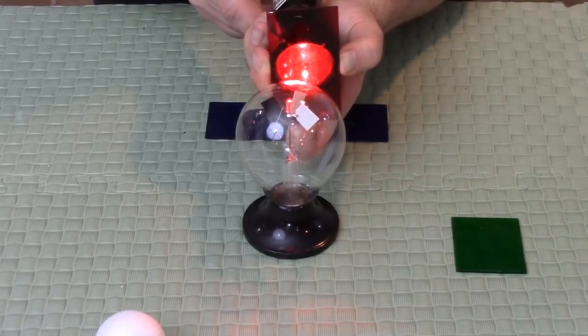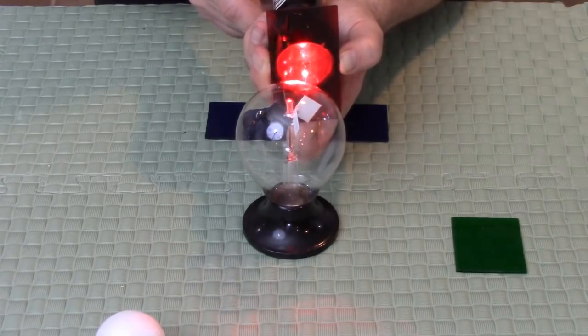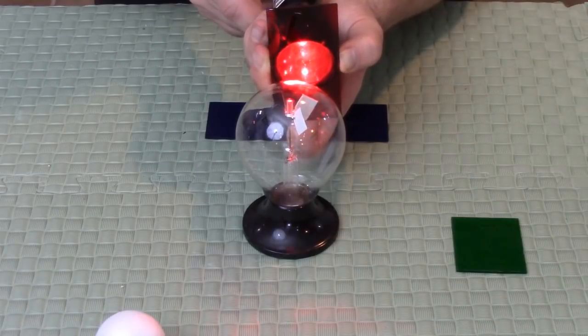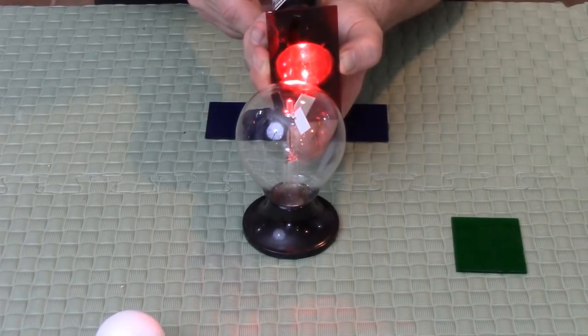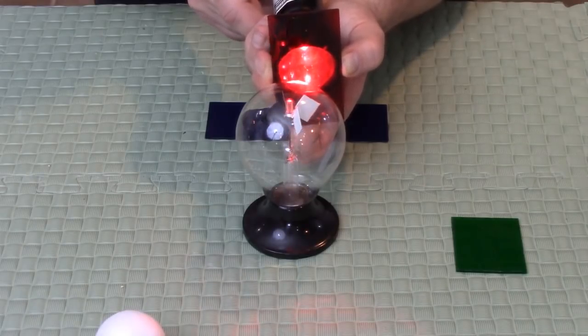There we go. So, he says with red light it won't spin and this here shows that's not correct, but that doesn't defeat what his theory is. Red light will make it spin, but it's almost doesn't even want to spin, but bright enough red light will in fact make it spin.